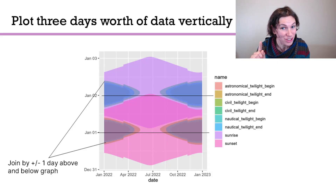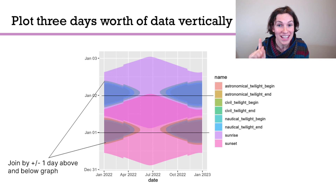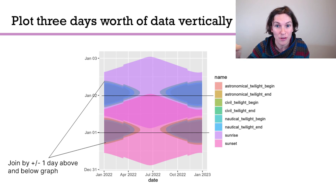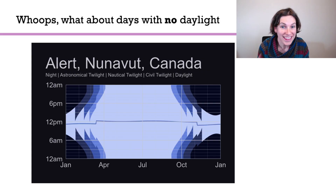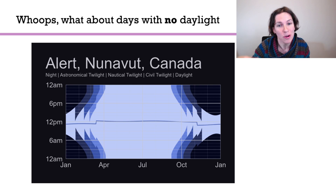You need to get, for each day, three days' worth of data: the data for that day, the data for the next day, and the data for the day before, and plot that for each day over the course of the entire year. Take all that data and then truncate the top and the bottom, and then the chart will be accurate. This sounds like insanity, but it actually works. And then I discovered the separate problem of days with zero daylight, which I had to solve as well.